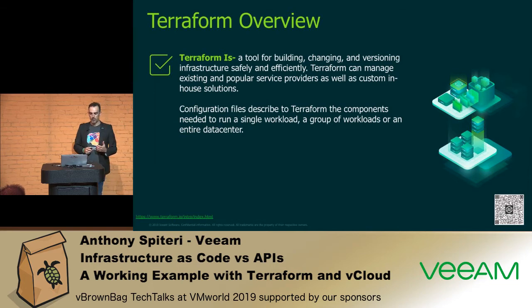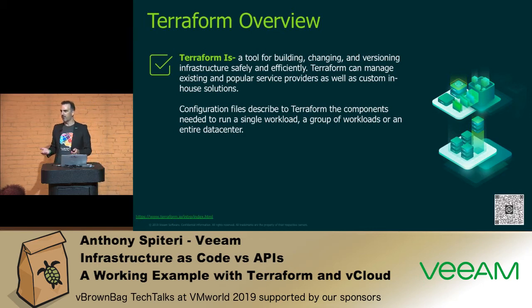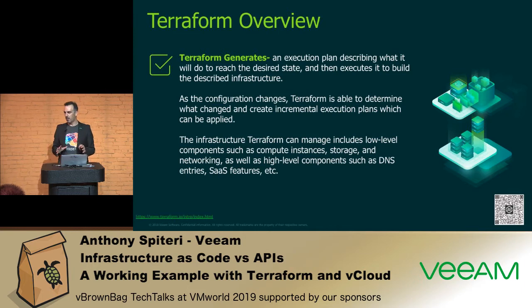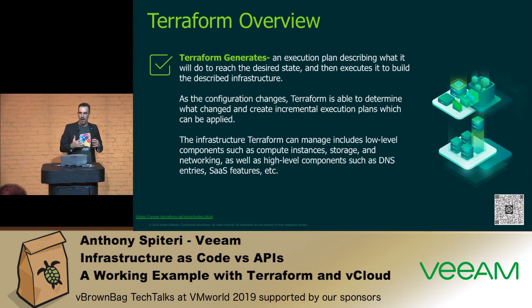Now, quickly to Terraform. Terraform is a tool for building, changing, and versioning infrastructure efficiently. Configuration files are what you use to declare its state. It generates an execution plan, which you validate and then apply — and when it applies, it talks to the API. The biggest thing about Terraform compared to direct API use is that the tool itself interacts with the API — it's basically a black box. You tell Terraform what you want it to do without needing to understand what the API is actually doing. You don't need to worry about schemas. It simplifies the way you interact with that endpoint.